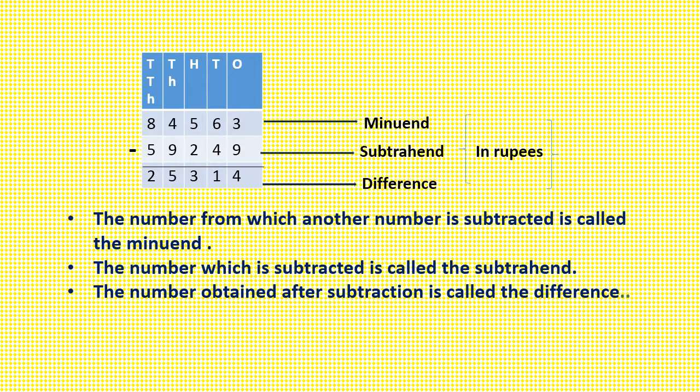Now we get three points. First, the number from which another number is subtracted is called the minuend. Second, the number which is subtracted is called the subtrahend. Third, the number obtained after subtraction is called the difference.